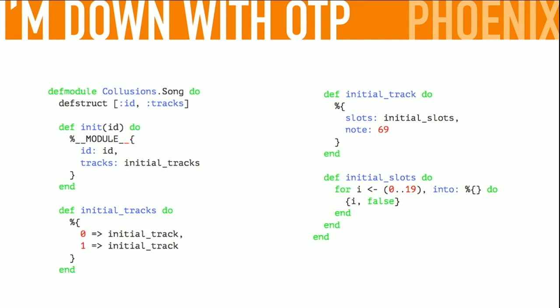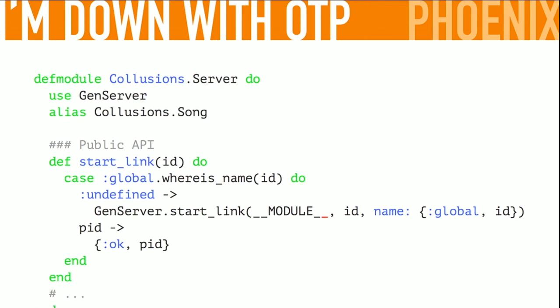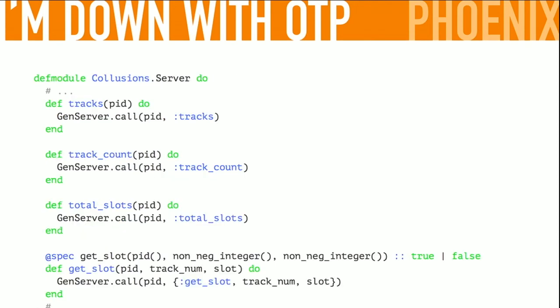If you squint at the Elixir code it looks the same as the Elm code. We have a song — a dictionary of tracks. We have two initial tracks with note 69, and we create 20 slots each. It's a normal gen server. We say 'where's the song you're trying to talk about?' — start link with a name, and if it doesn't exist we start one; if it does exist we return whatever it was. The public API lets you ask what tracks there are, how many there are, what the total slots are, and get the value of a given slot — all using genserver.call to talk to the process and get data back.